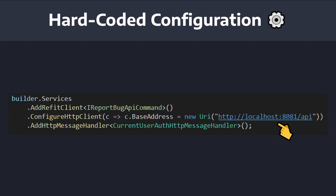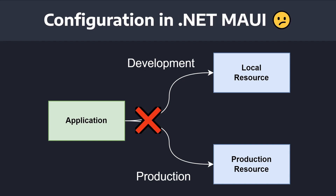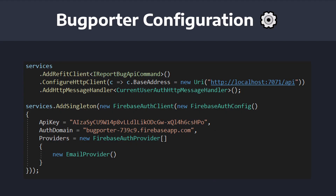Like many applications, there are certain values that we just cannot hardcode if we want to deploy our application to production. There might be some values that we load in development mode, but other values that we load in production mode. However, .NET MAUI does not have great built-in support for loading certain values based on environments.